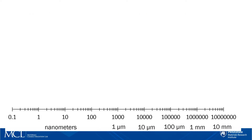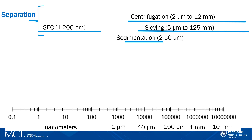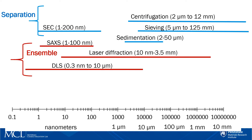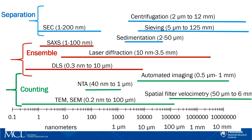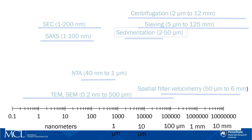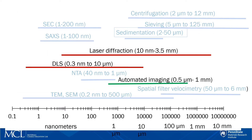Here is an example of different techniques for each of these classes: separation techniques, ensemble techniques, and counting techniques. This plot also shows the size ranges that they cover. You can observe that each class covers the entire range of particle sizes. For this presentation, I will focus on the three particle sizing techniques available at MCL: laser diffraction, dynamic light scattering, and automated imaging.